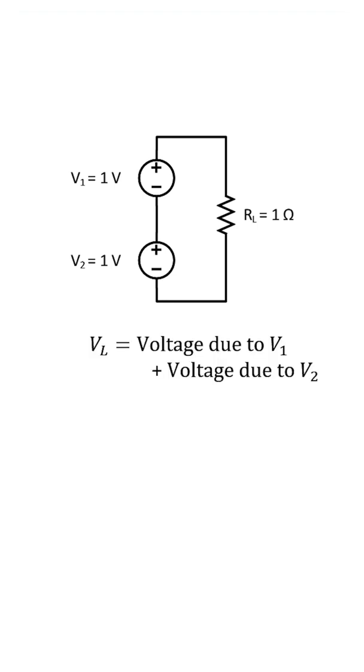We can use superposition to find the voltage across the load resistor. If I zero out source 2, I see that the voltage due to source 1 is 1 volt.